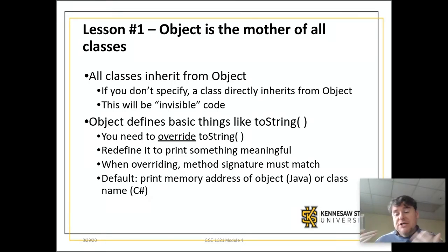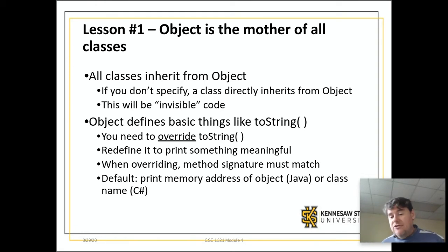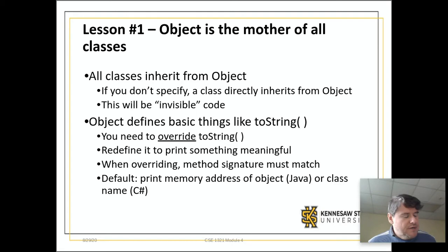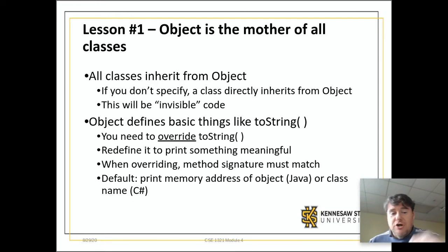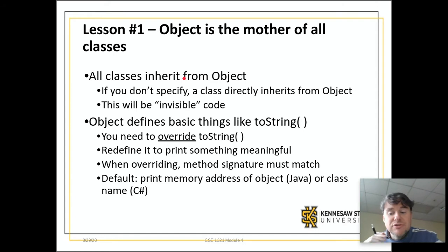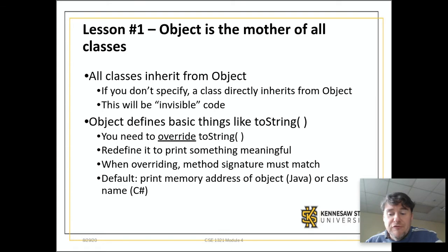Every object that you use and have ever written inherited from an object named object. There is a magical object called object, and it exists in both Java and C#. It is at the root, and literally every object in both Java and C# automatically inherits from object, whether you like it or not.